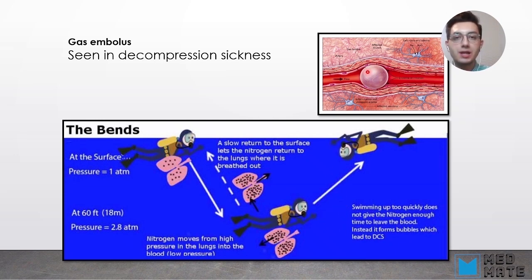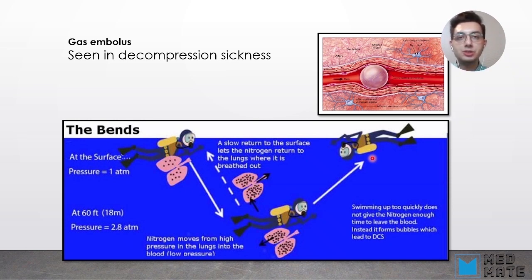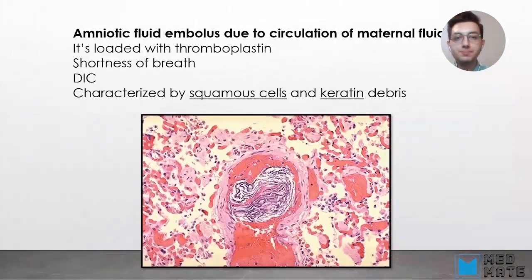Another way gas embolism can occur is in laparoscopic surgery, because the abdominal cavity is filled with gas. If there is a disruption of any blood vessels, gas embolism can happen.